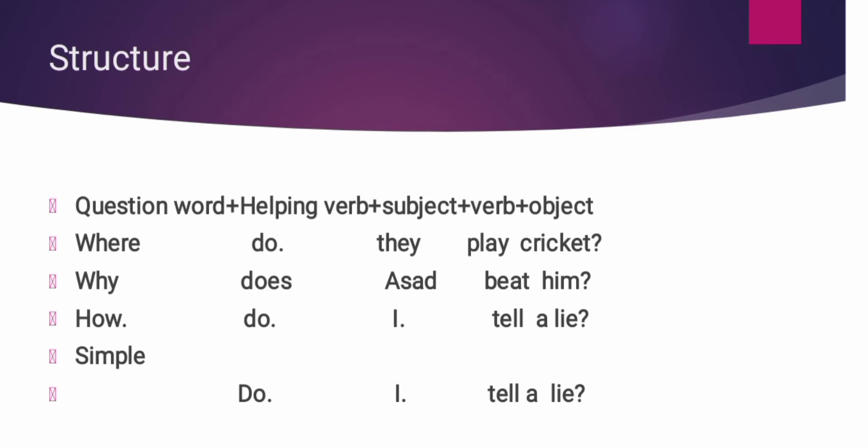Next example: Why does Asad beat him? — Asad उसे क्यों मारता है? क्यों के लिए why question word है. Asad singular noun है, इसलिए does helping verb इस्तमाल होती है. Why question word है, does helping verb है, Asad subject है, beat verb है, और him object है.